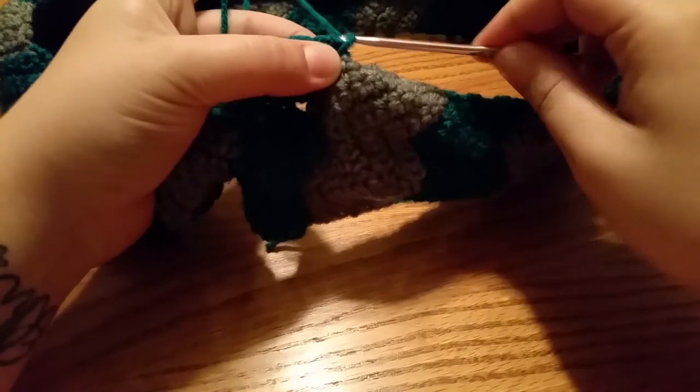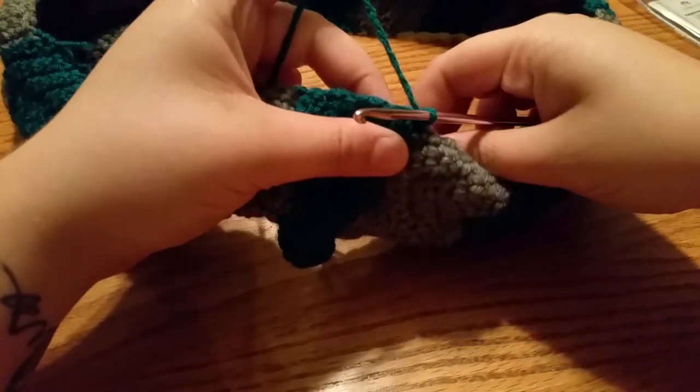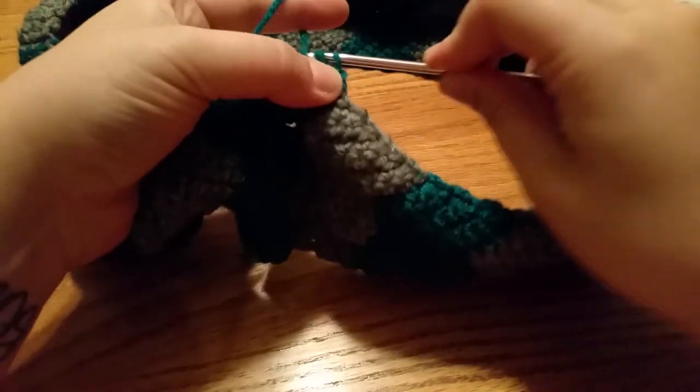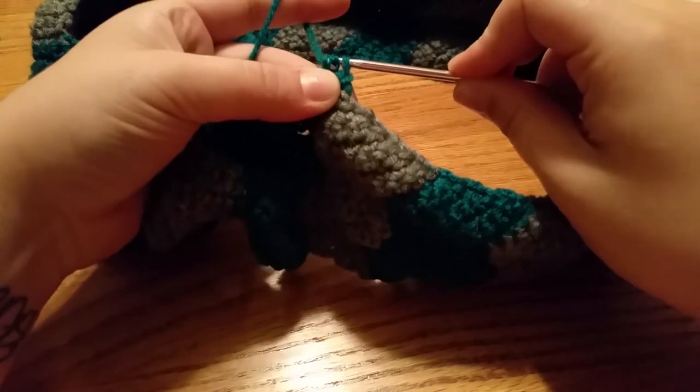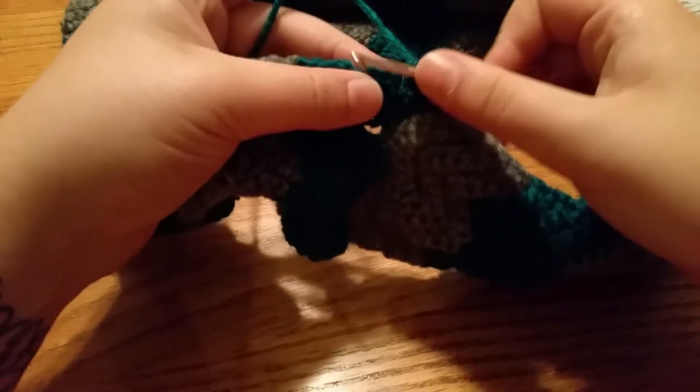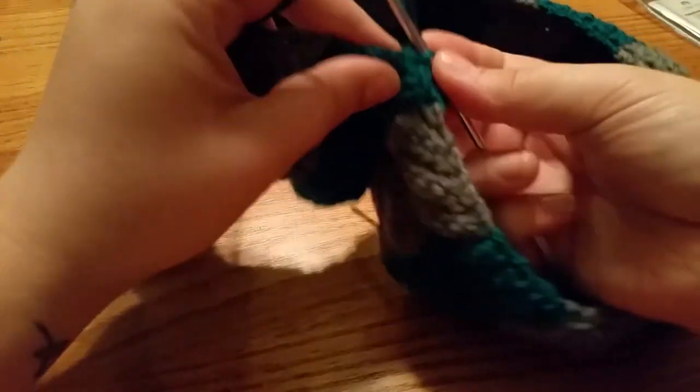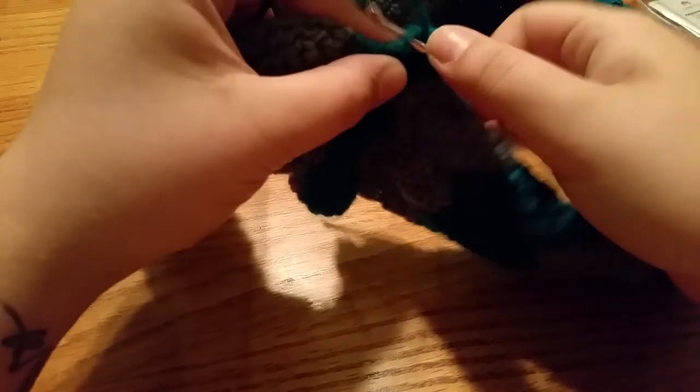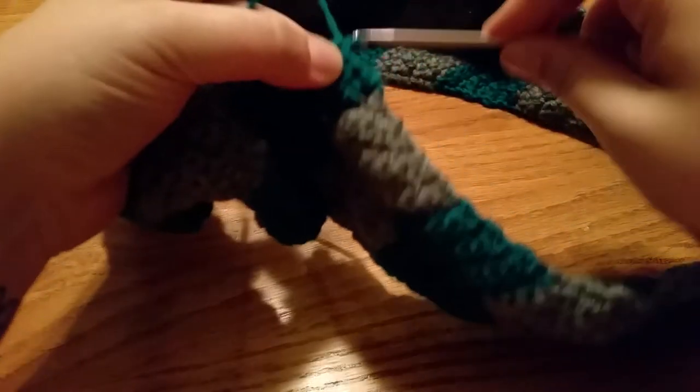So after I connect the two sides, I'm going to add my first color and I am going to start single crocheting in each of the spots around and I'm going to do this for two rows and I'm going to do it on both sides. So both sides have a nice border. Very simple.